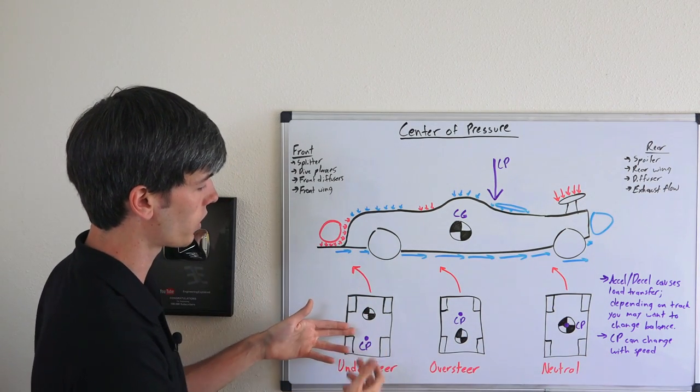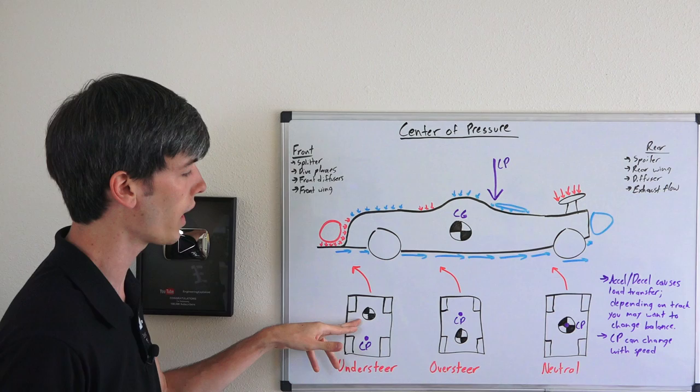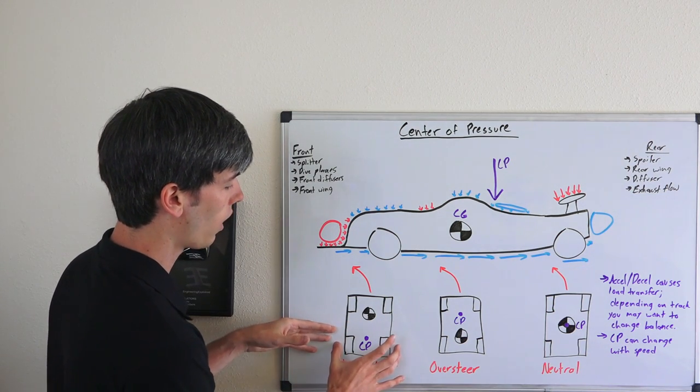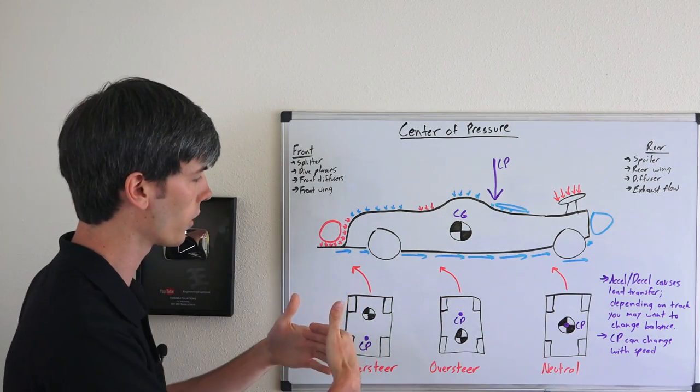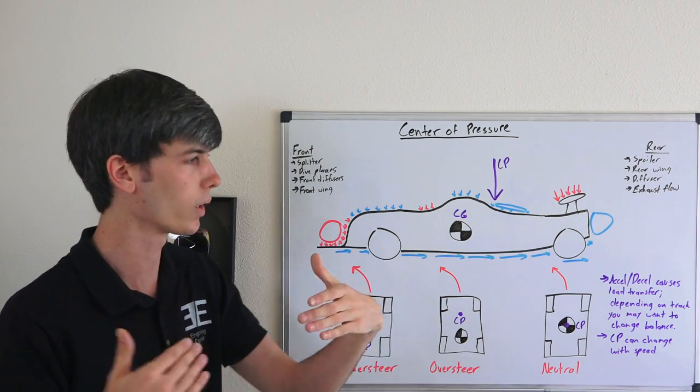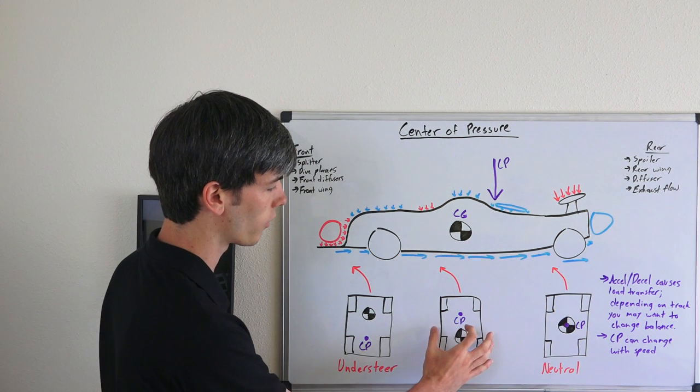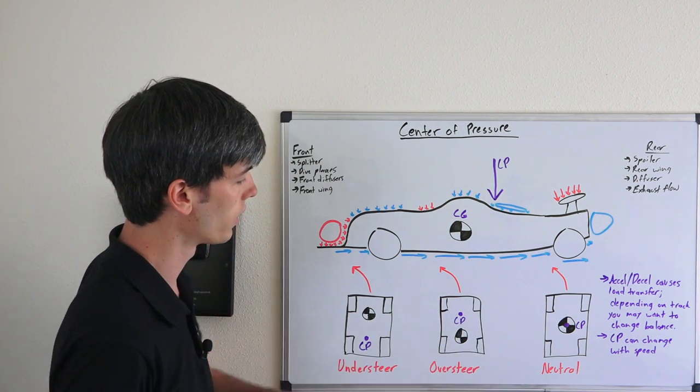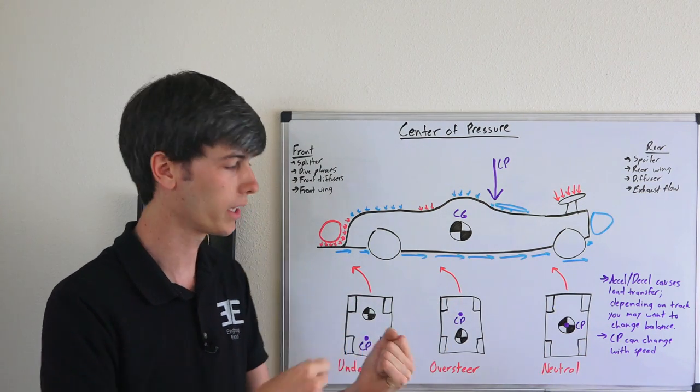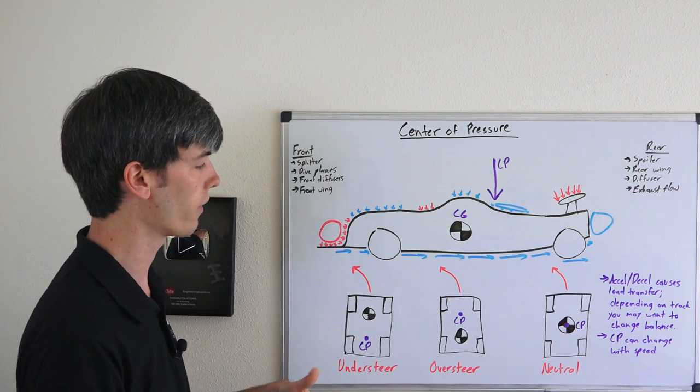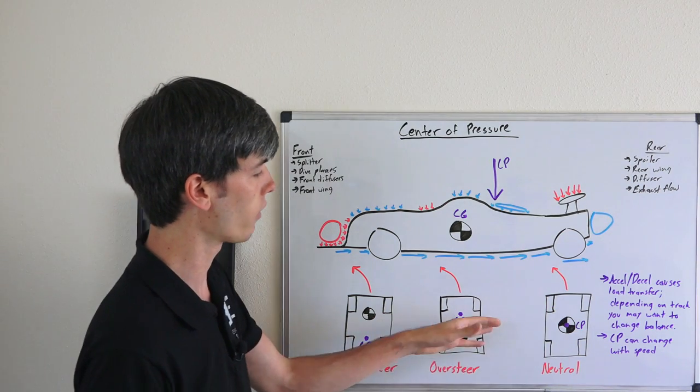If you have your center of pressure far behind your center of gravity, you're going to have a lot more load on your rear tires than your front tires when you're going around a corner. So your front tires aren't going to have enough grip, and you'll understeer. If your center of pressure is in front of the center of gravity, then you're going to have a lot of load on your front tires, so they'll have plenty of grip, but your rear tires won't have that additional grip, and you'll have oversteer.